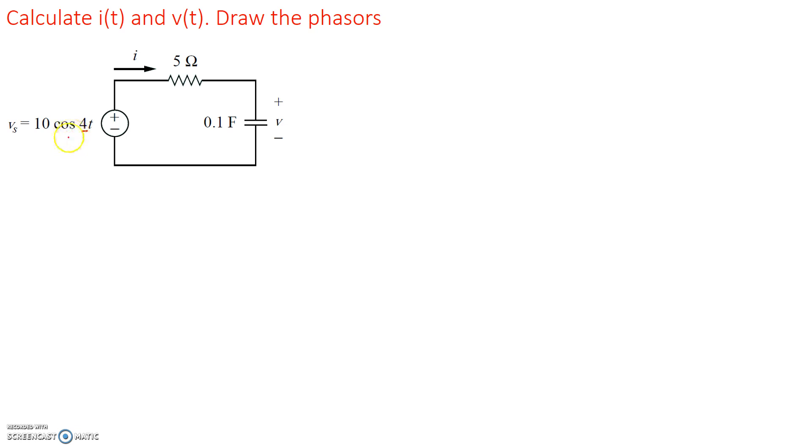And in phasor domain, we're going to write it as Vs is equal to 10, the amplitude, and the phase angle. In this case, the phase angle, you can write this also as 10∠0 degrees. So the phase angle here is basically 0 degrees. So we'll write this as Vs equals 10∠0 degrees.